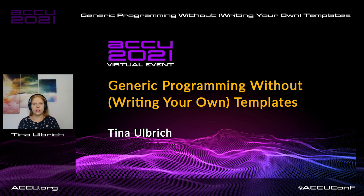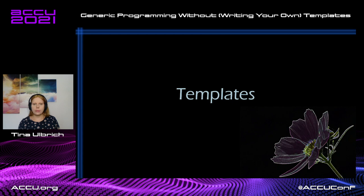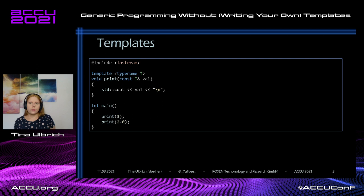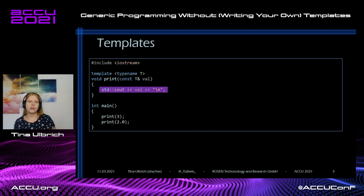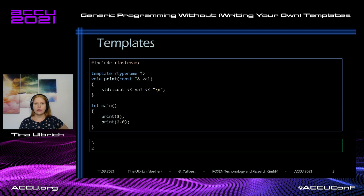Let's start. I said I want to tell you ways to do generic programming without writing templates, but in order to explain why, I will have to start with templates. Templates, as you probably know, are used to enable generic programming. I have a function template here which accepts any type and prints its value to the console using cout. Then I call the print function with an int and a double, and it prints out the values.